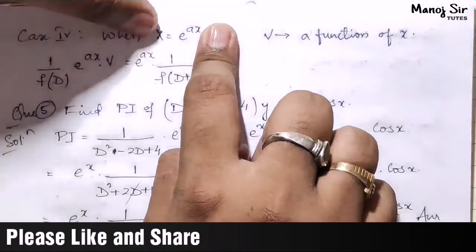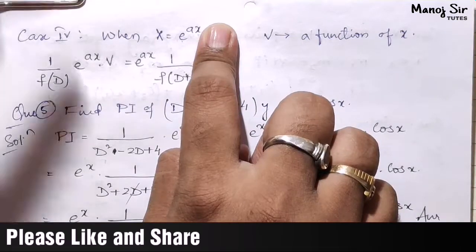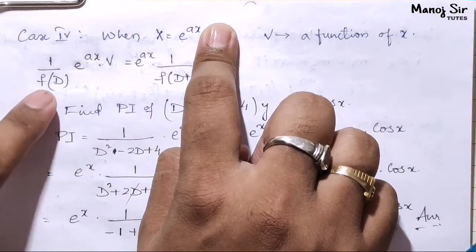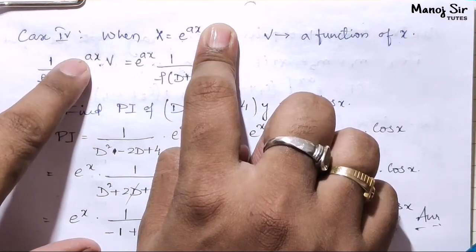When X was in exponential form, we replaced D with a, where a is the coefficient of x.